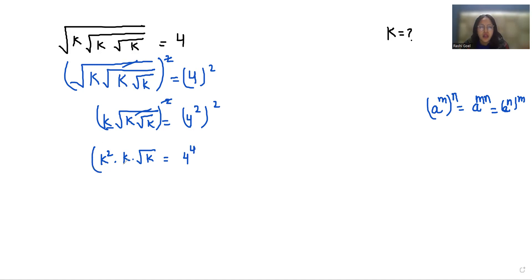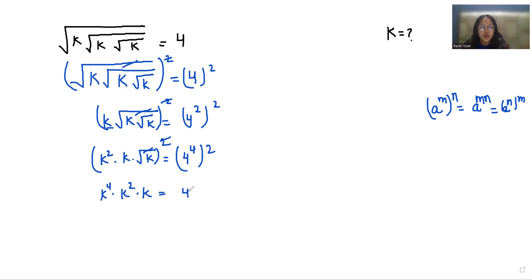Now again I'm doing squaring on both sides. It becomes k to the power 4, times k squared, and this square root eliminates with the help of the square, equals 4 to the power 8.